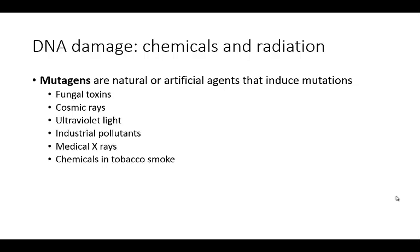Most frequently, when DNA is going to be damaged, it is through chemicals or radiation. When we talk about mutagens, these are natural or artificial agents that will induce mutations. Some are naturally found in our environment — things like fungal toxins, cosmic rays, or UV light. Others, like industrial pollutants, medical x-rays, or chemicals in tobacco smoke, are things an individual might be exposed to through various means.